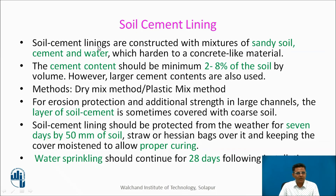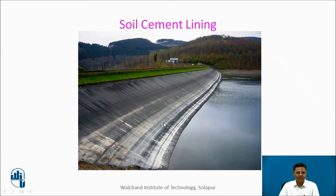Soil cement linings are constructed with mixtures of sandy soil, cement, and mortar. The cement content can be 2 to 8 percent of soil. One can use a dry mix method or plastic mix method. For erosion protection, a layer of soil cement is covered with coarse soil. Soil cement lining should be protected from weather for 7 days using 50mm soil, straw, or hessian bags, keeping the cover moist for proper curing. Water has to be sprinkled for 28 days. This is soil cement lining for a canal.